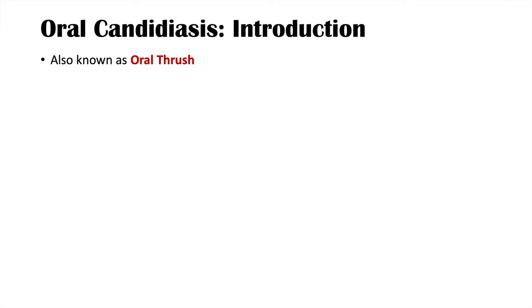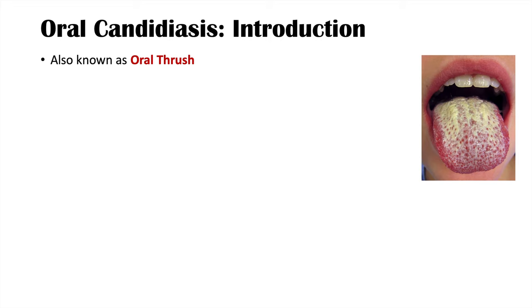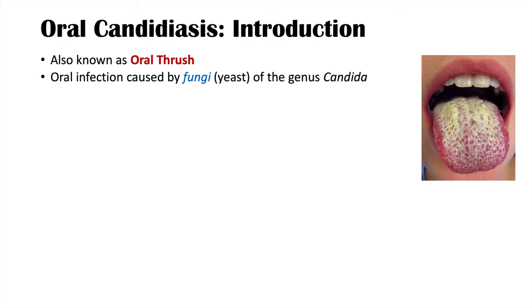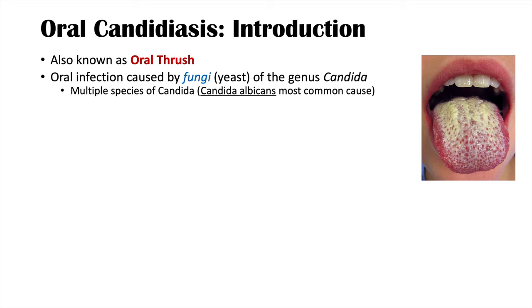Oral candidiasis is also known as oral thrush. It is an oral infection caused by fungi of the genus Candida — they are actually yeast. There are multiple species of Candida, but Candida albicans is the most common cause. It is often an opportunistic infection, meaning it infects people who are immunocompromised or who are sick due to another cause.